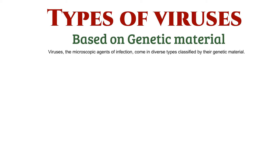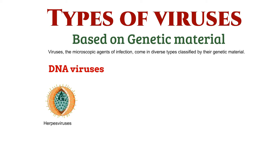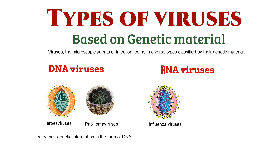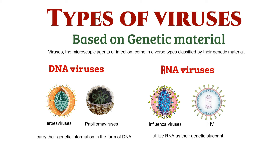First, we have DNA viruses, like herpes viruses and papillomaviruses, carrying their genetic information in the form of DNA. On the other hand, RNA viruses, such as influenza viruses and HIV, utilize RNA as their genetic blueprint.